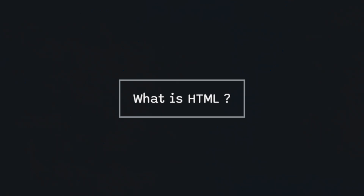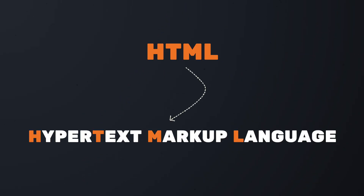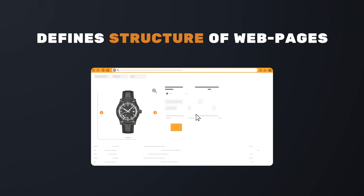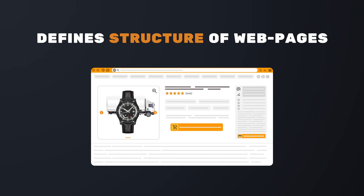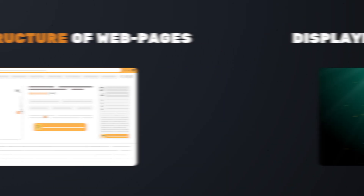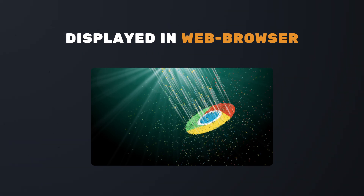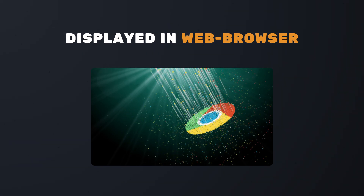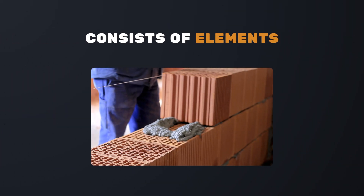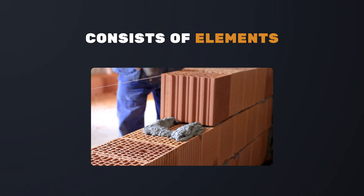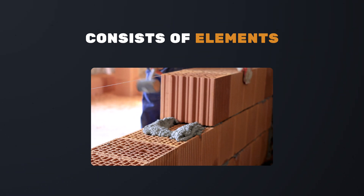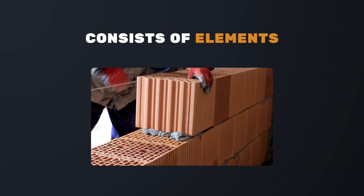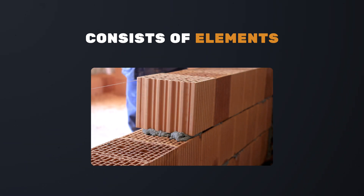You might be wondering, what is HTML all about? It stands for Hypertext Markup Language. But that info alone isn't enough. HTML is used for structuring web pages — think of it as the blueprint of a building. We can see our HTML code in action in a web browser like Google Chrome. At its core, HTML is made up of elements: the building blocks, like paragraphs, images, and links, that you can piece together to build something great.